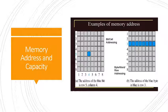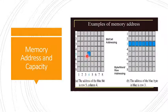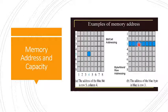Each memory location needs an address. If the memory is addressed to a cell, then one bit is being addressed. But if the memory is addressed to the byte or word, then that is the smallest amount of data that can be addressed. In the example shown, the address of the blue bit is row 5, column 4, which represents bit-per-cell addressing. This figure also shows byte or word addressing, where the address of the blue byte is row 3, representing byte or word or row addressing.